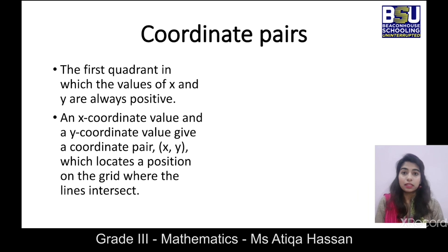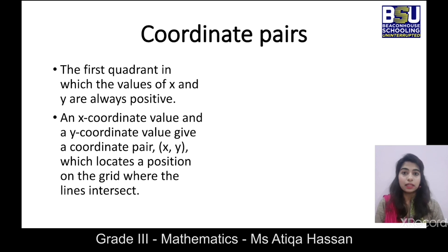If we talk about coordinate pairs, we have two values per pair. We have a total of four quadrants: first, second, third, and fourth — but for now we are going to focus on the first quadrant. The first quadrant is where both the x-coordinate and y-coordinate values are positive. An x-coordinate value and a y-coordinate value together give us a coordinate pair (x, y), which tells the position of a specific point in the coordinate system.